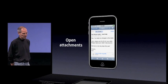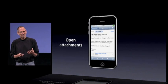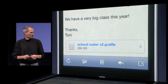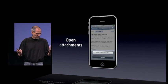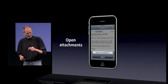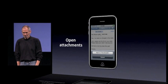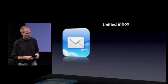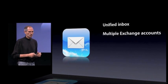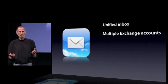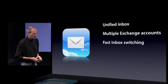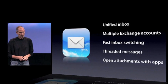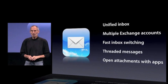And open attachments — the ability to get an attachment in email, tap on it, and open it with an app from the App Store. This is really great. In this case it's OmniGraphe, and I can just tap it and it'll open with the app. So some new features in Mail — there's lots more — but the biggest ones are the unified inbox with multiple Exchange accounts, fast inbox switching, threaded messages, and you can open attachments with apps.